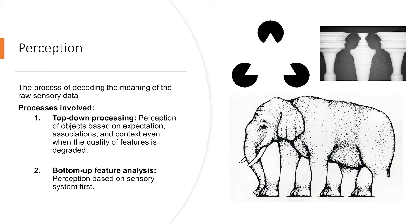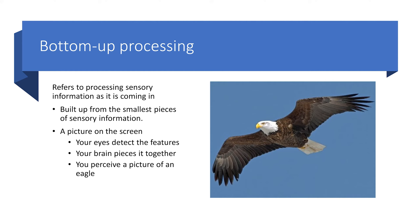For example, in this picture of an eagle, your eyes detect features such as the outline of the wings, head, and beak, as well as the proportions of the eagle. Your brain pieces it together, and you perceive it as an eagle. You don't need context to identify it because it has a simple background. If there had been other birds flying around with it, or a complex forest background, then we may need top-down processing to accurately classify the eagle.